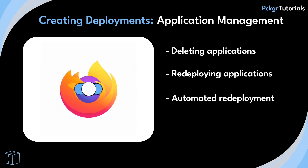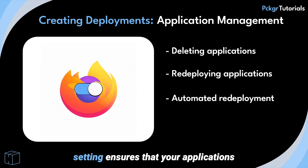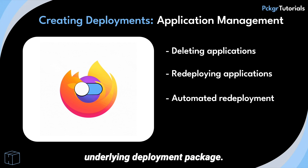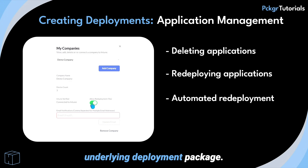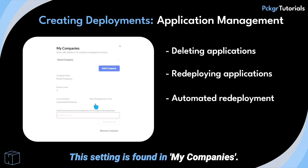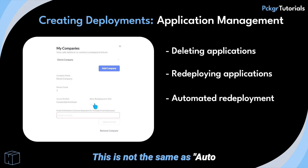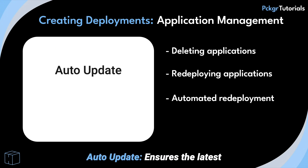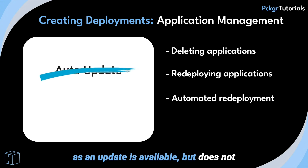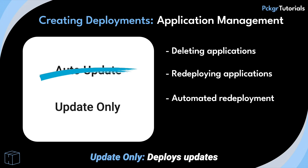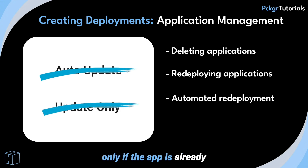Automatic redeployment. The automated redeployment setting ensures that your applications are automatically redeployed whenever Packager updates the underlying deployment package. This setting is found in My Companies. This is not the same as Auto Update or Update Only. Auto Update ensures the latest version of an app is installed as soon as an update is available, but does not change how it was originally deployed. Update Only deploys updates only if the app is already installed on the device and does not install it from scratch.